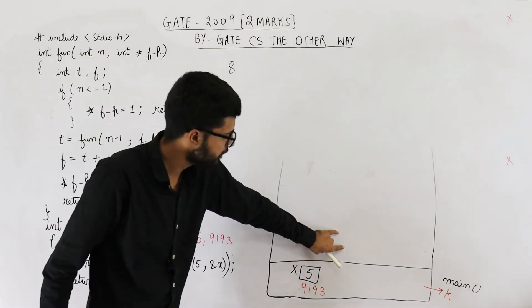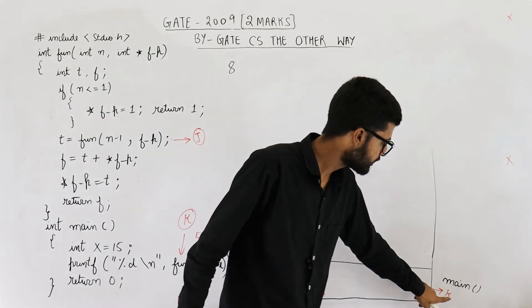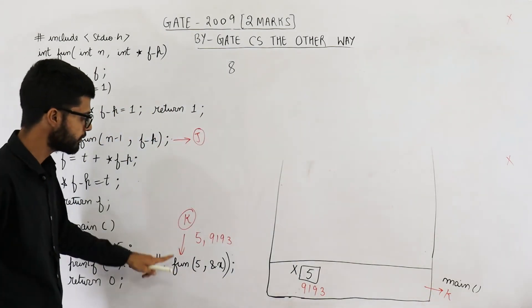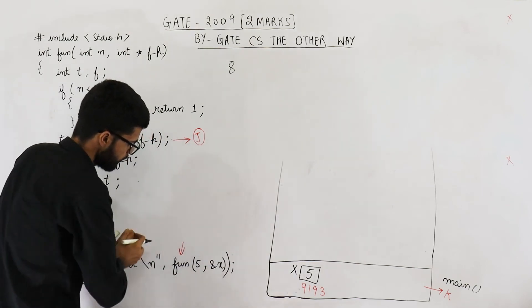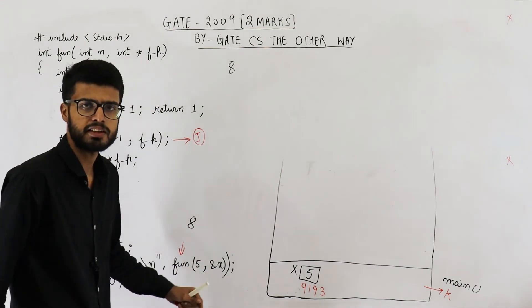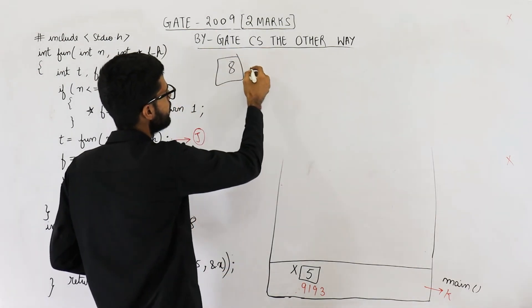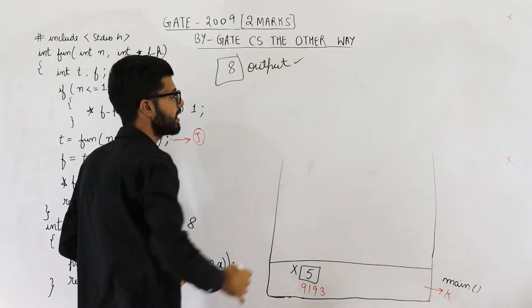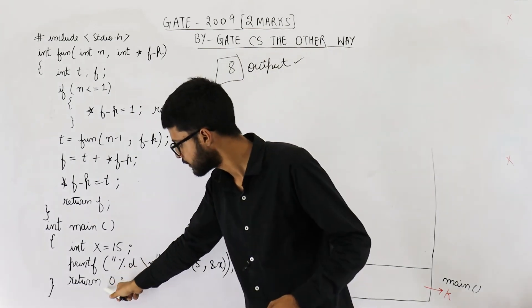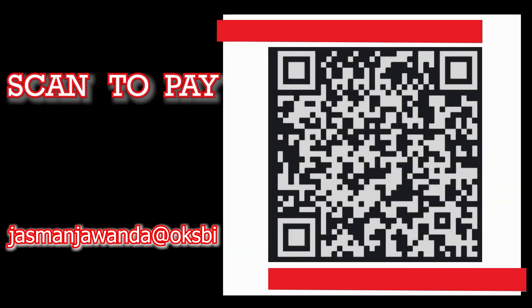The entire stack is now almost empty. The n=5 frame gets t=5. f = t + *fp = 5 + 3 = 8, so f becomes 8. Next: *fp = t, so x is updated to 5. Then value 8 is returned to the main function at line number k. So printf prints 8 — that is the output of this program. The next line is return 0 and the program ends. Have a good day!